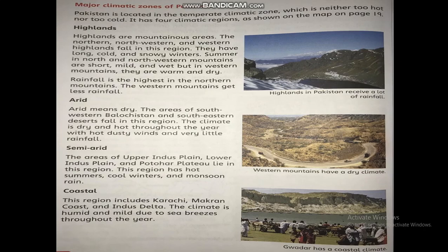Arid means dry. The areas of southwestern Balochistan and southeastern desert fall in this region. The climate is dry and hot throughout the year, with hot dusty winds and very little rainfall. Semi-arid: The area of upper Indus Plains, lower Indus Plains, and the Potohar Plateau lie in this region. This region has a hot summer, cool winters, and monsoon rain.